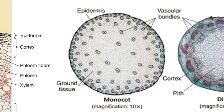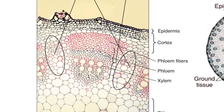The xylem of a vascular bundle is primary xylem. In addition to the tracheary elements, there are a large portion of xylem parenchyma and xylem fibers. The phloem of a vascular bundle is the primary phloem. In addition to the sieve elements and their associated cells, there are storage parenchyma and phloem fibers or sclereids.